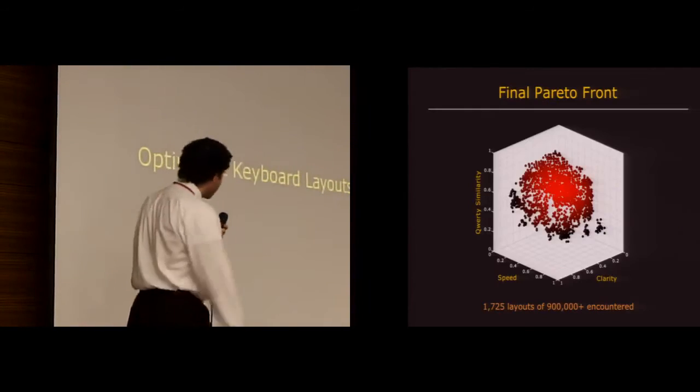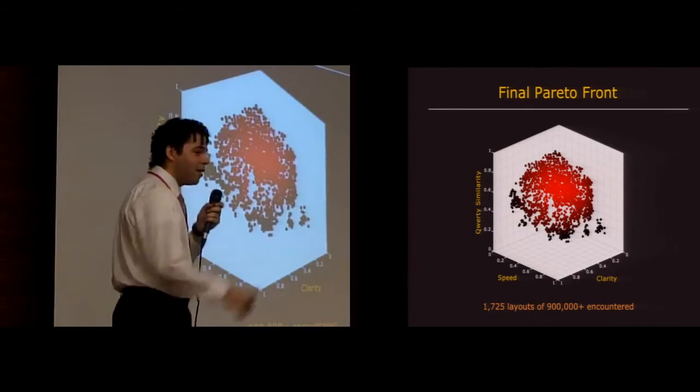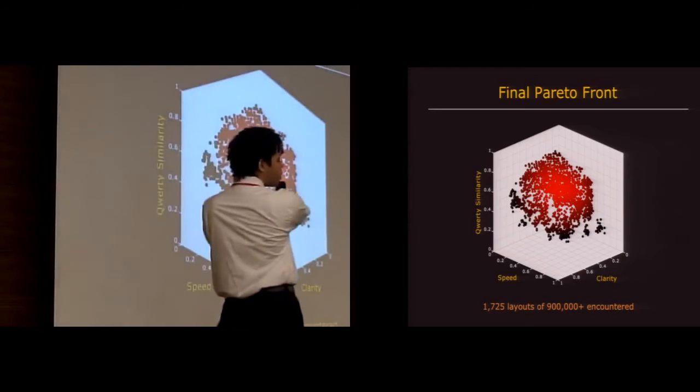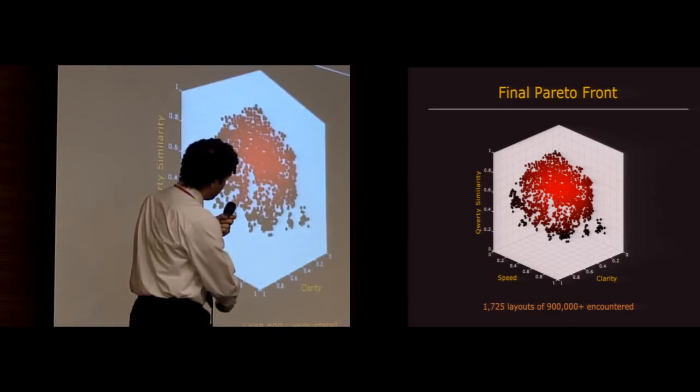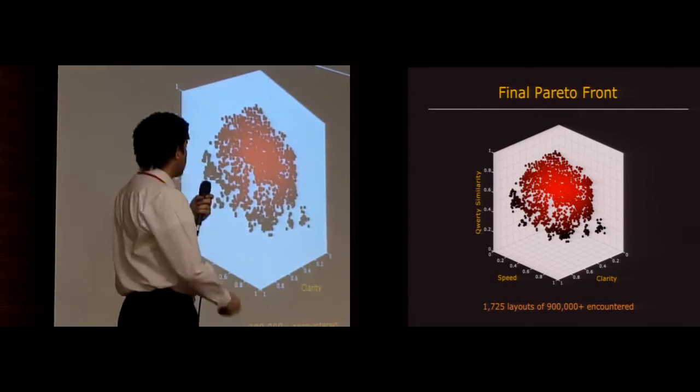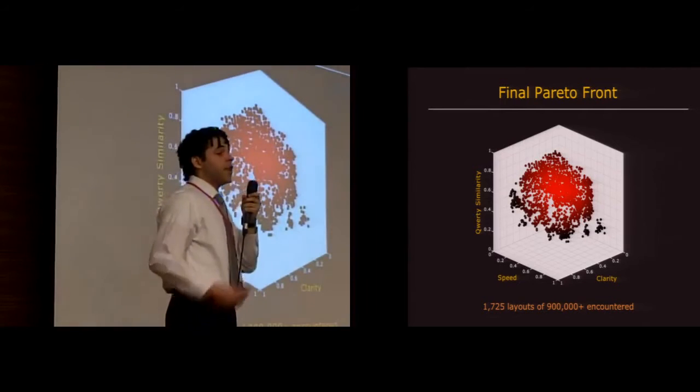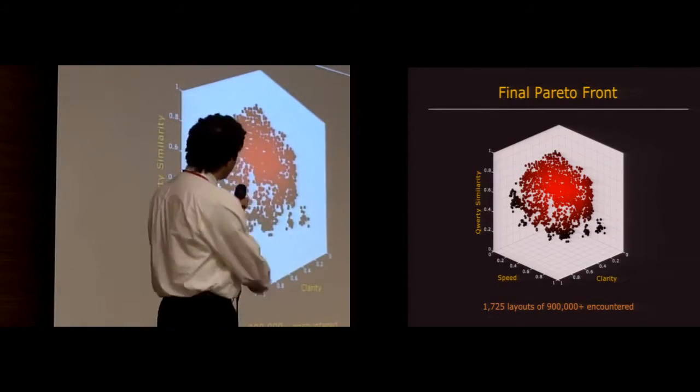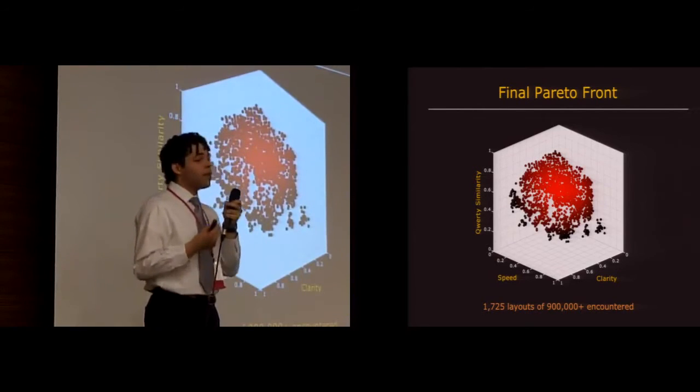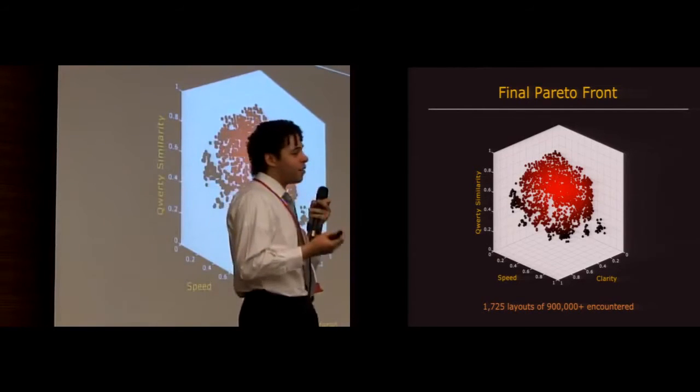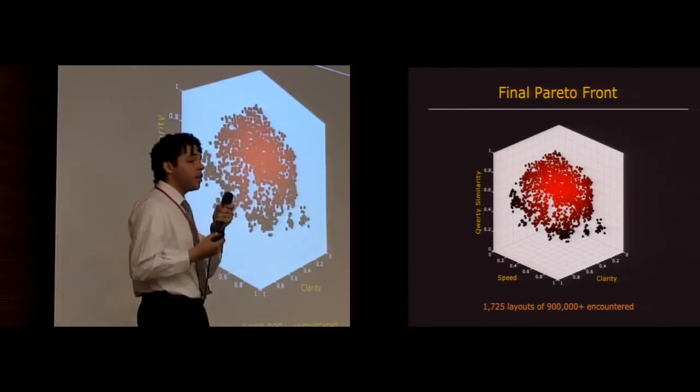So this is the final Pareto front in 3D. It's convex, so lighter colors are farther from the origin in the back. And the axes here are normalized, so 0 is min and 1 is max. So I should mention that none of the layouts on the Pareto front are inherently better than the others. Each is better than the rest in some way. And the process of choosing a layout from the front amounts to figuring out what your tastes are. So how important is learnability compared to speed or clarity for you?